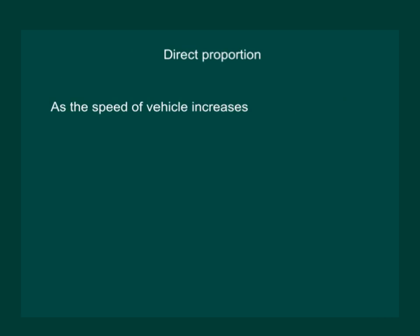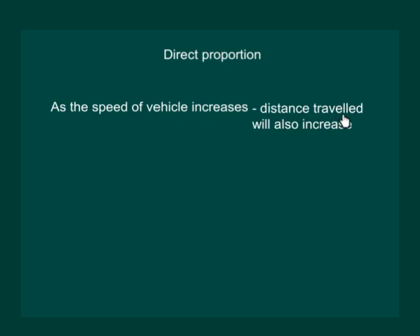Let us start the concept of direct proportion. What will happen as the speed of the vehicle will increase? We know that distance travelled will also increase. Hence, we can say that speed is directly proportional to the distance travelled.